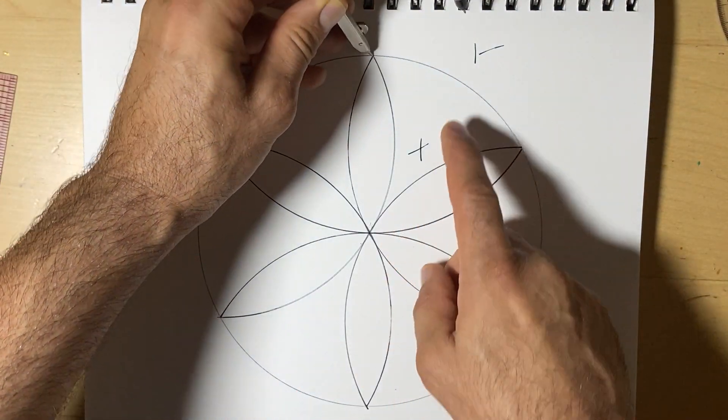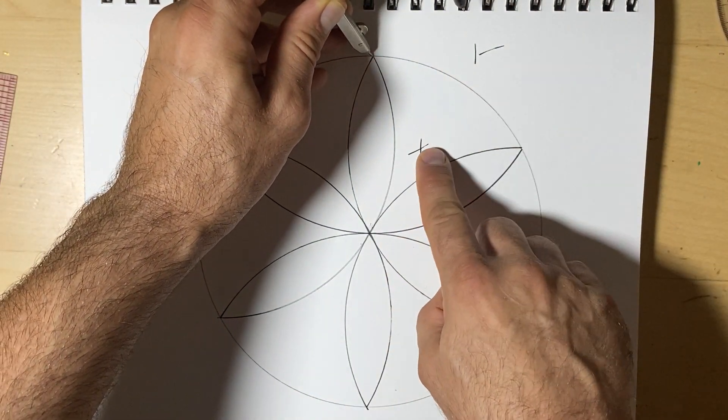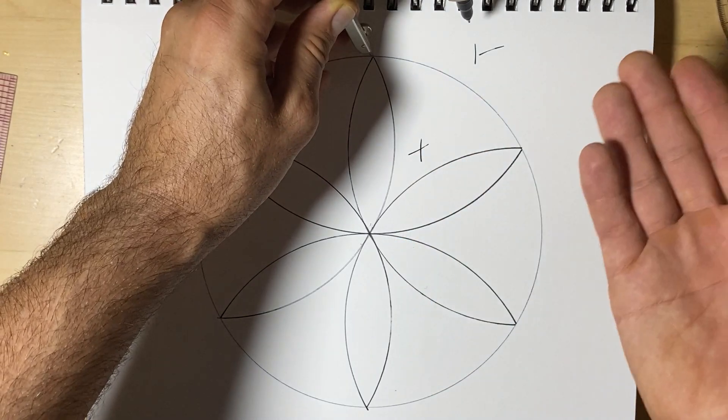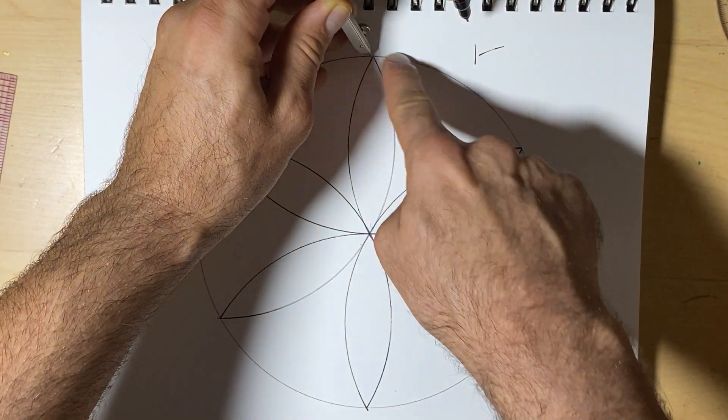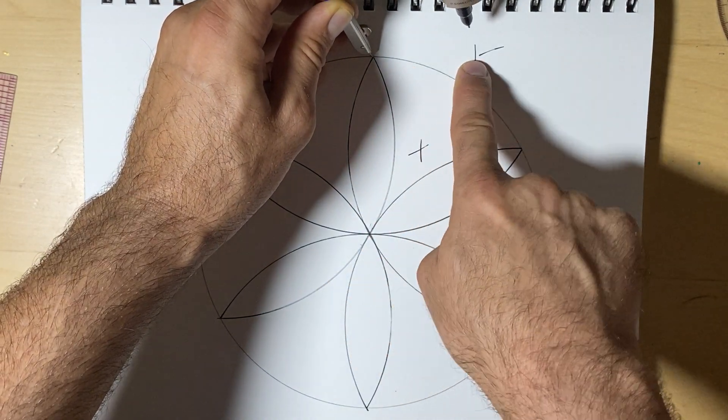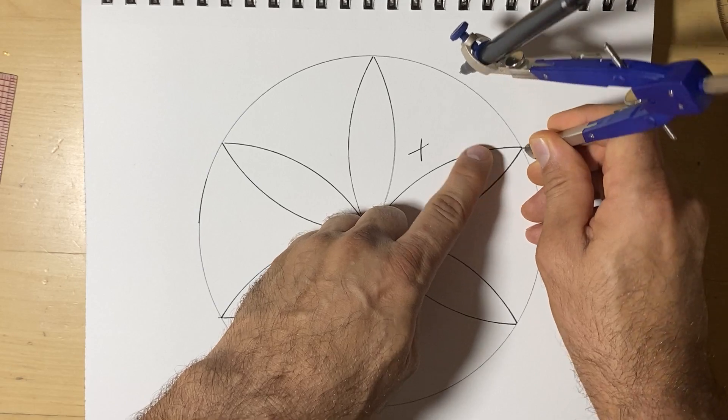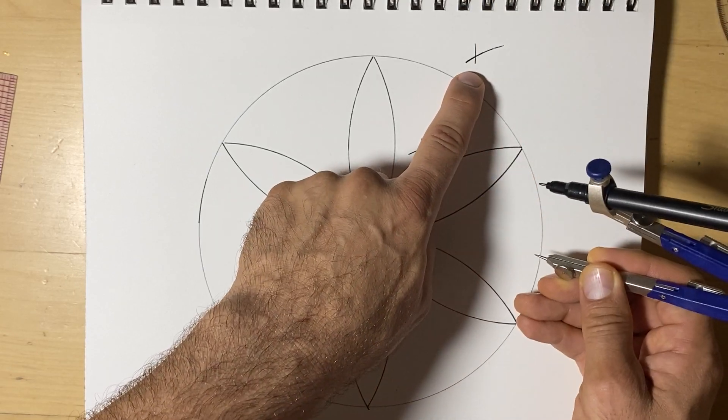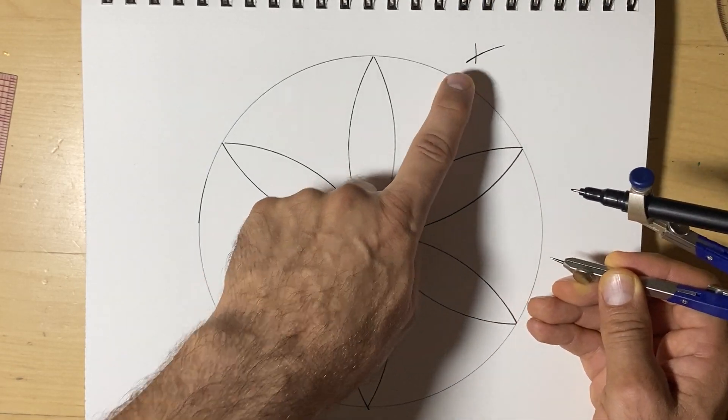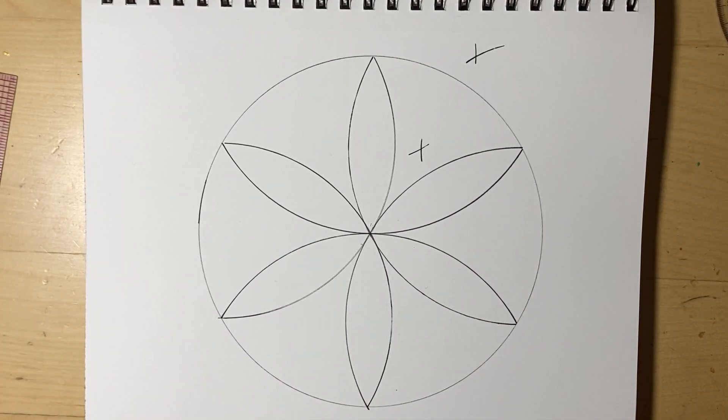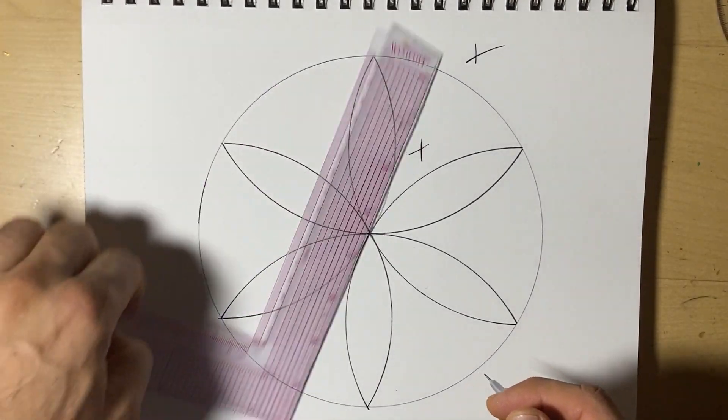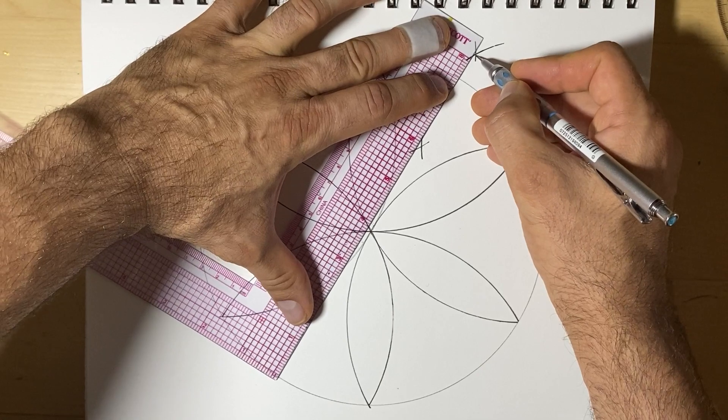And when we find where the two arcs meet, here and here, we're going to find the center of these two, or in between these two petals. Now here, I didn't have them meet. I will go back to where I started and extend it. So now we have two little X's, two little X marks the spot.